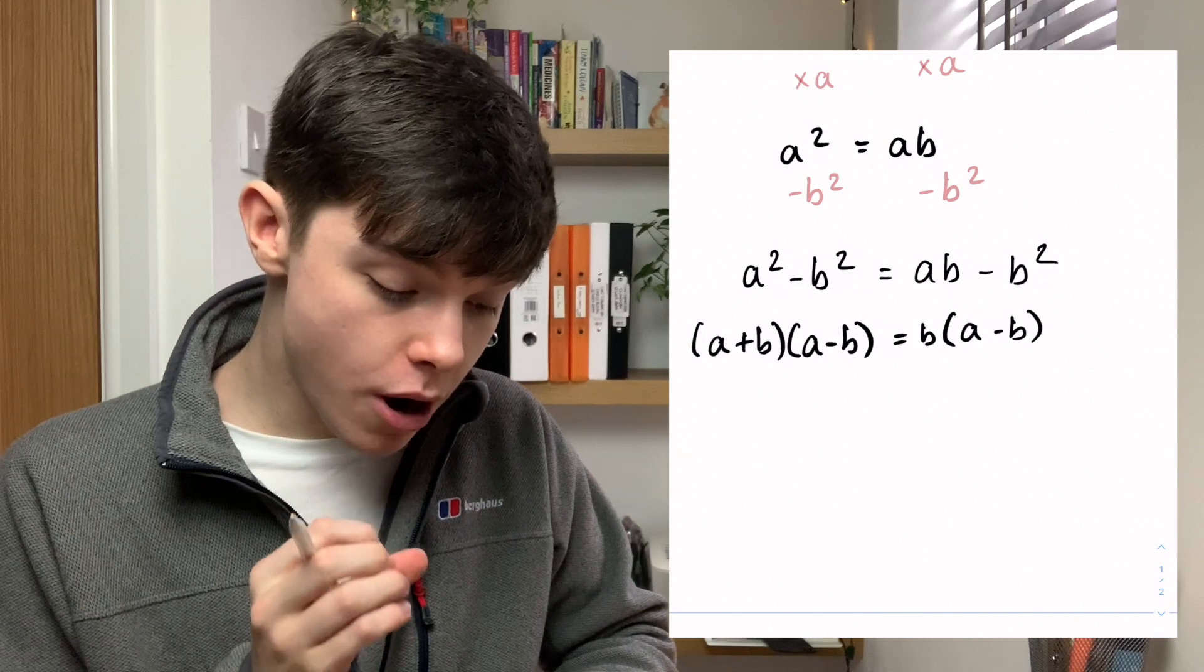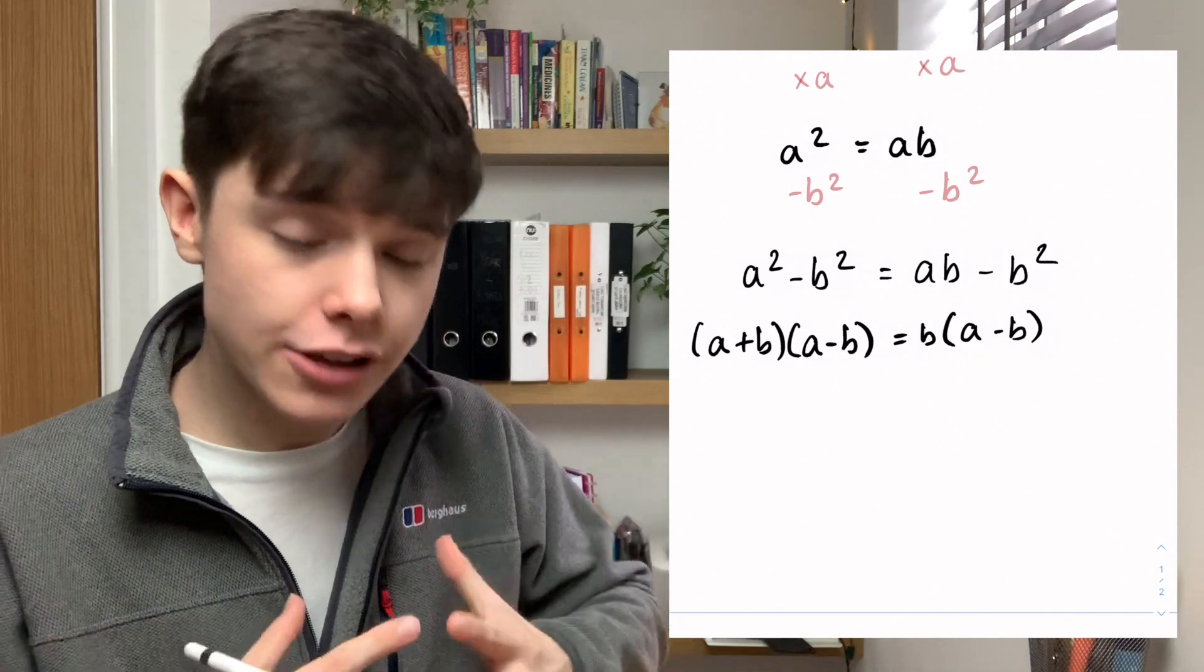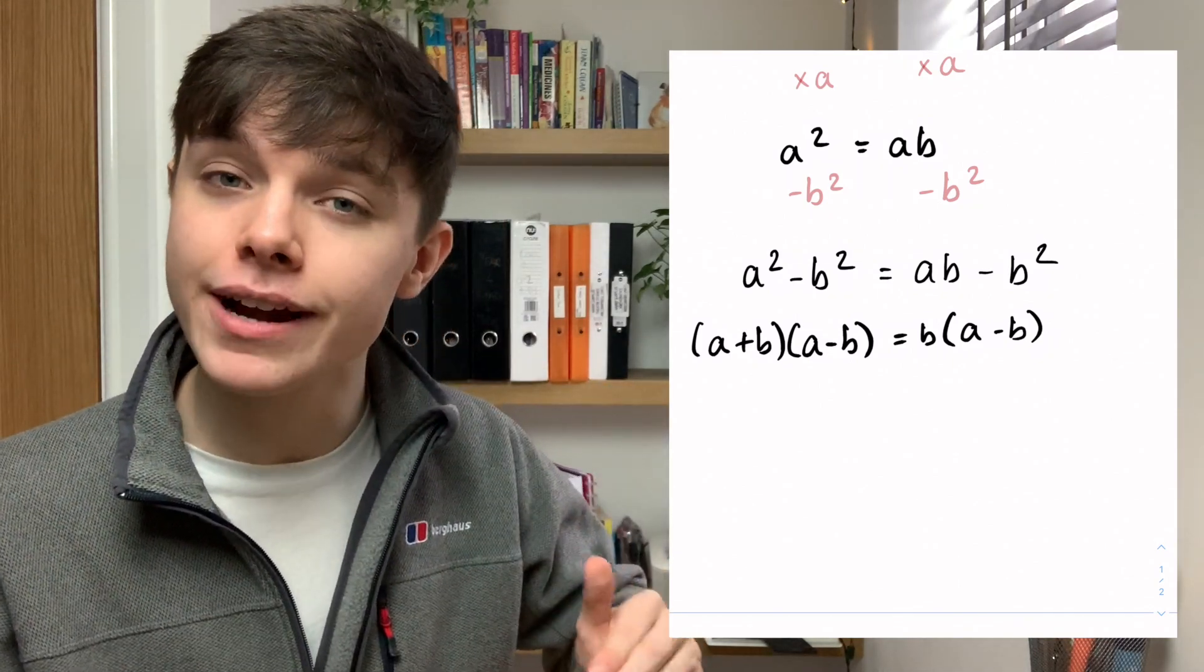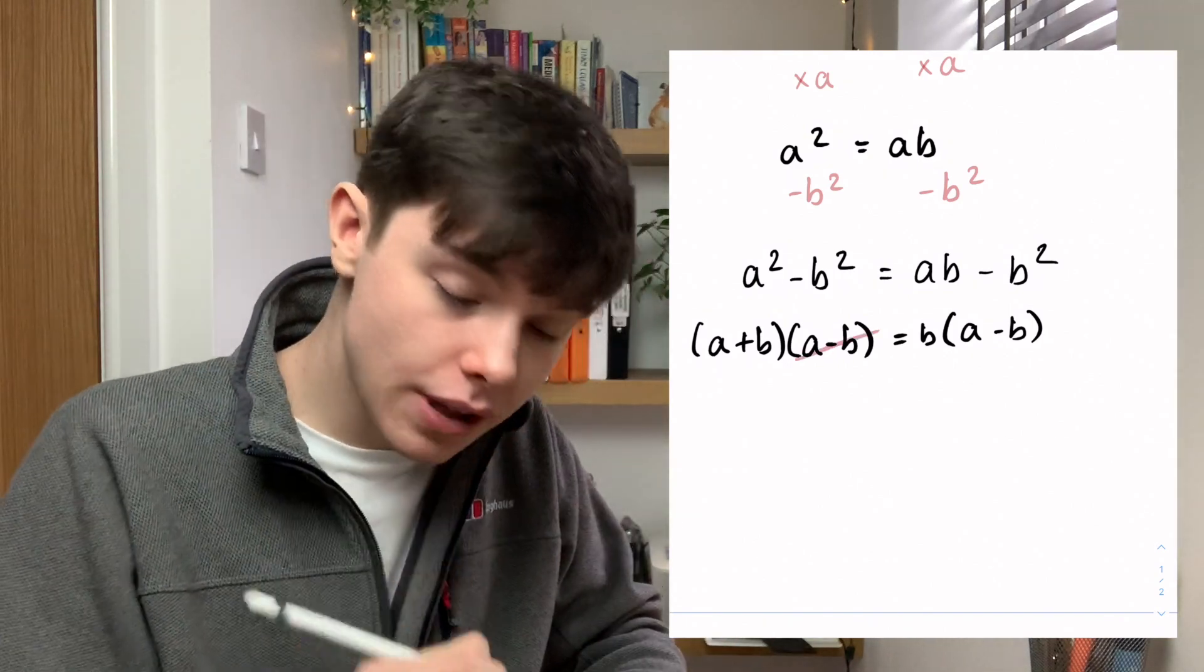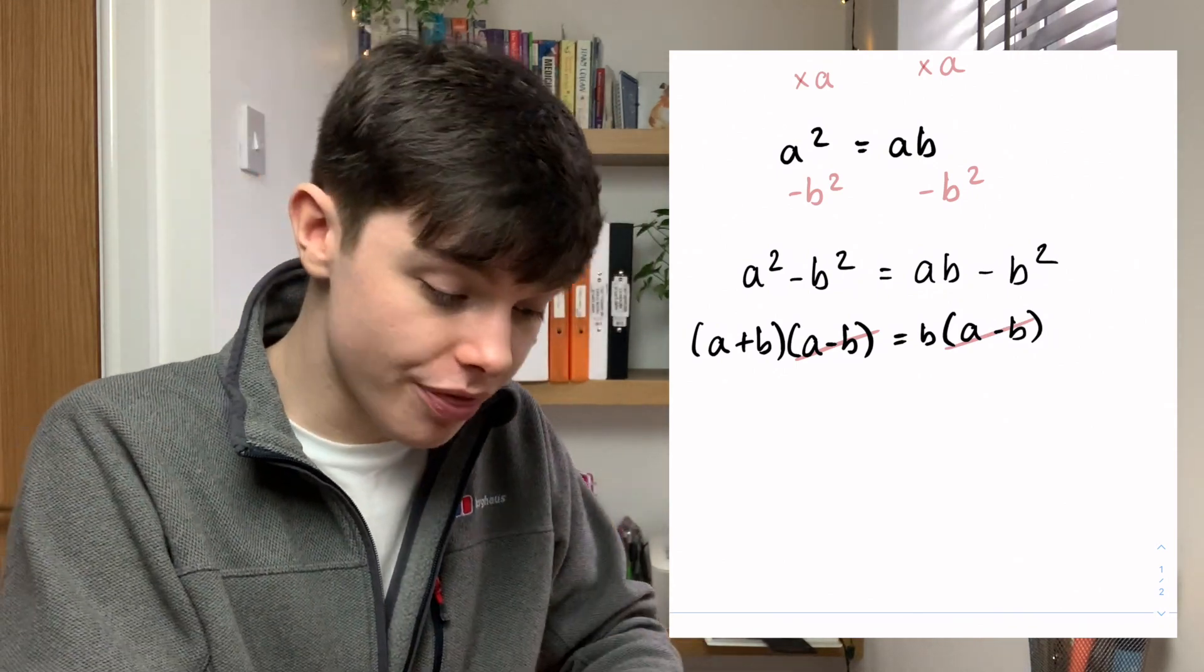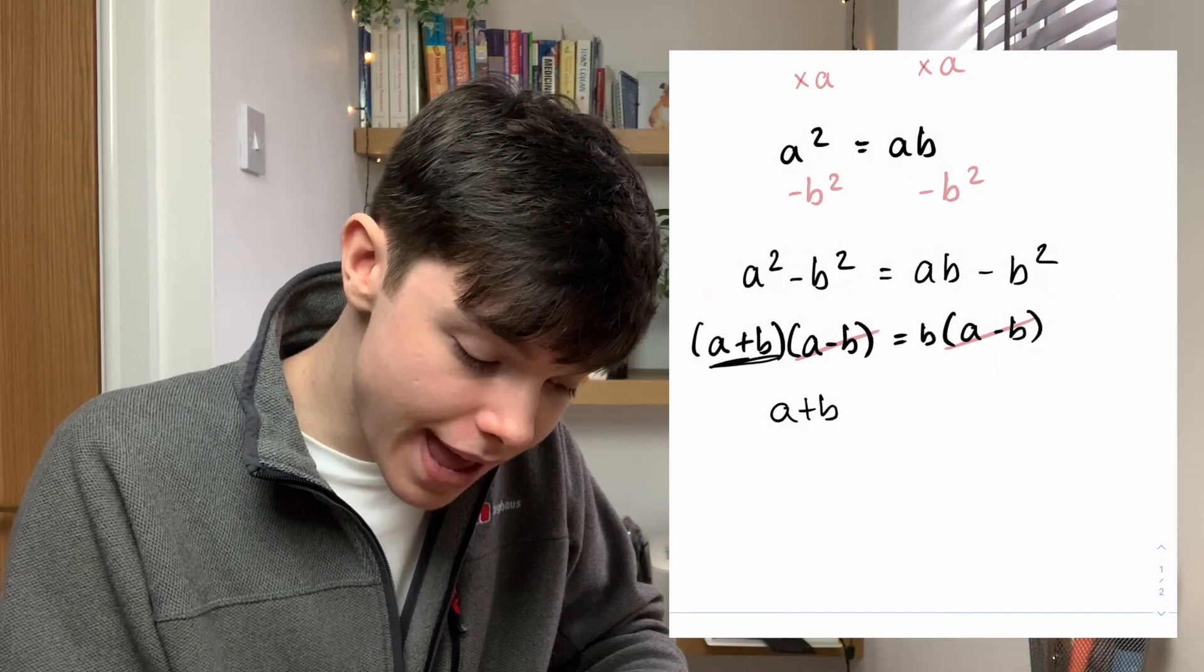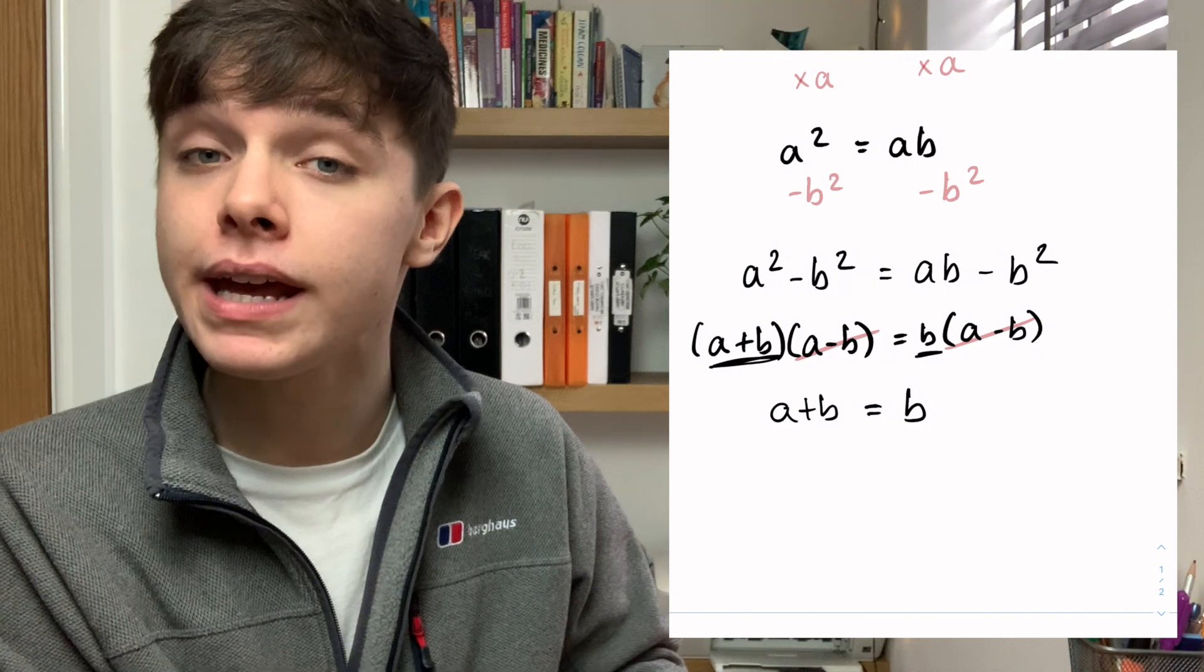Now I can see on both sides I've got an (a - b). So what I can do is I can cancel those out because what that means is I can divide by (a - b) on both sides and get rid of them. Then that leaves me with (a + b) from here and b from there. So we get a + b equals b.